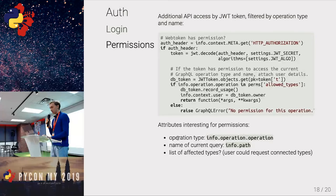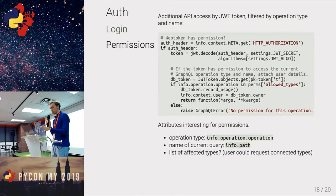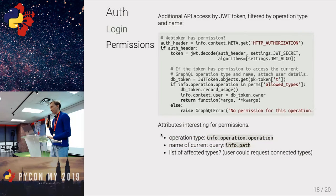A third level of permission control — filtering by affected types — can't be done with a login decorator; it needs to be done in a resolver. For example, if you don't want users to read certain fields like 'age' or the details of connected followers, you'd filter at the model or type level in the resolver function. But if you only want to filter by operation and operation name, a login decorator is sufficient.